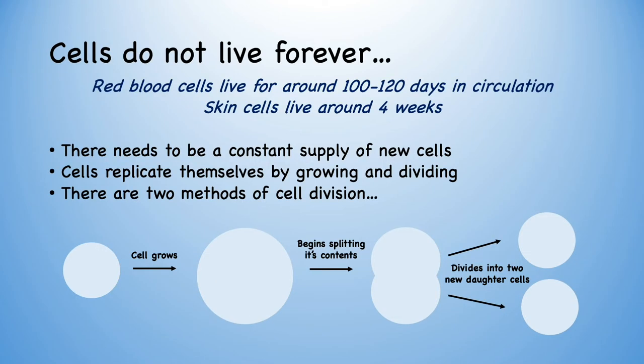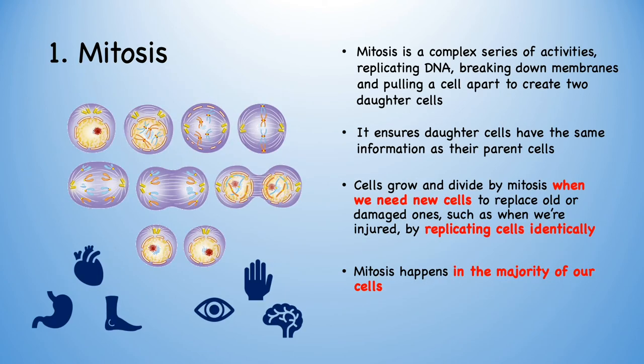Cells don't live forever. Red blood cells last around 100 to 120 days in circulation, whereas skin cells only live around four weeks. So to make sure we don't shrivel away, there needs to be a constant supply of new cells. Cells replicate themselves by growing and dividing. The first method of cell division is mitosis — a complex series of activities replicating DNA and breaking down membranes to pull a cell apart and create two identical daughter cells. This happens when we need new cells to replace old or damaged ones, such as when we're injured, and occurs in the majority of our cells, including our eyes, skin, heart and brain.